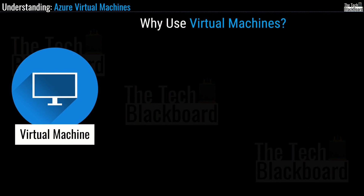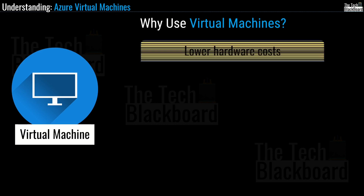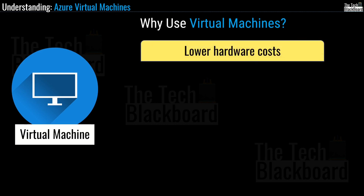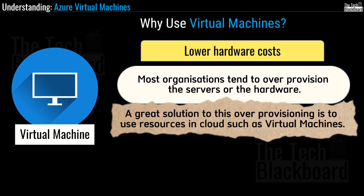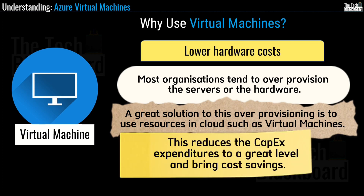It's now time to understand some key benefits of virtual machines and the scenarios when to use them. The first benefit is lower hardware costs. Many organizations do not fully utilize their hardware resources, and that's why it makes perfect sense that instead of investing in another physical server, these organizations can spin up a virtual machine inside Azure cloud. Virtual machines replace traditional hardware with virtual environments, infrastructure and storage, thus eliminating the upfront cost of expensive hardware.